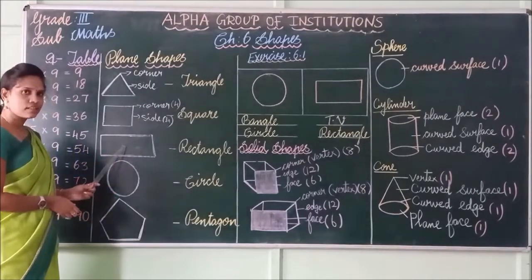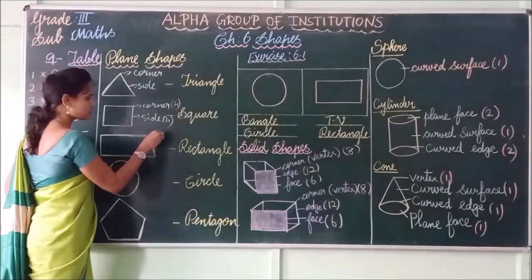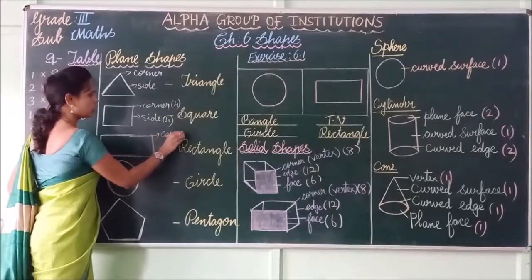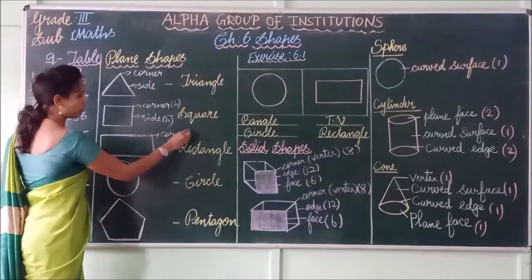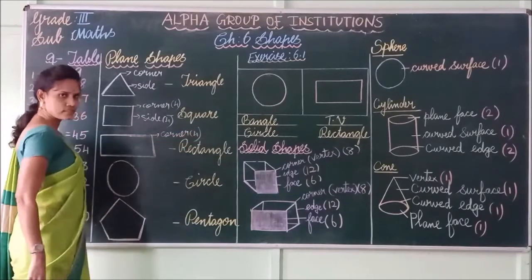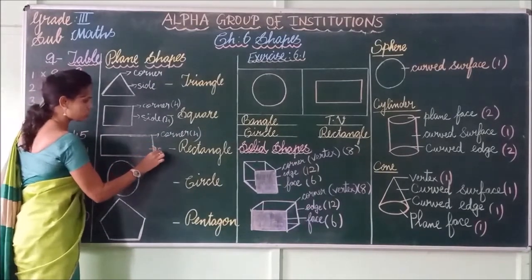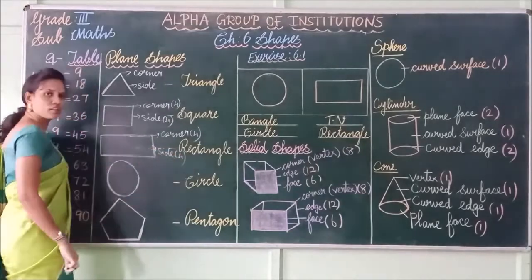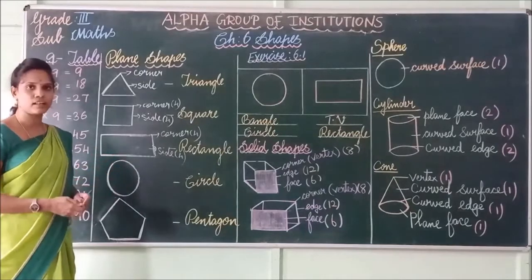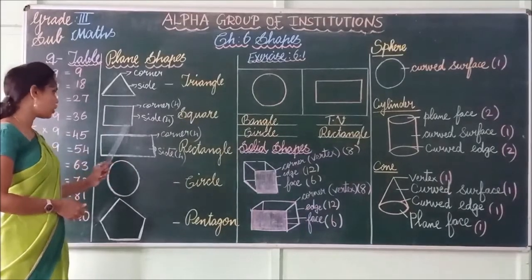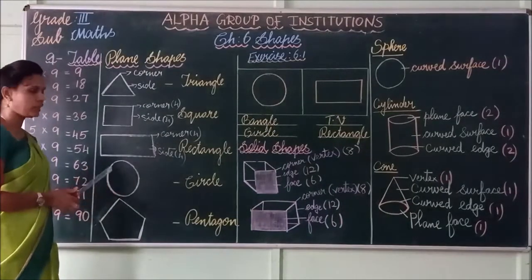Next — what shape is this? This is a rectangle. How many corners are there in a rectangle? 1, 2, 3, 4 — so 4 corners. And sides: 1, 2, 3, 4 — so 4 sides. What is the difference between square and rectangle? In a square all the sides are equal. In a rectangle only the opposite sides are equal.